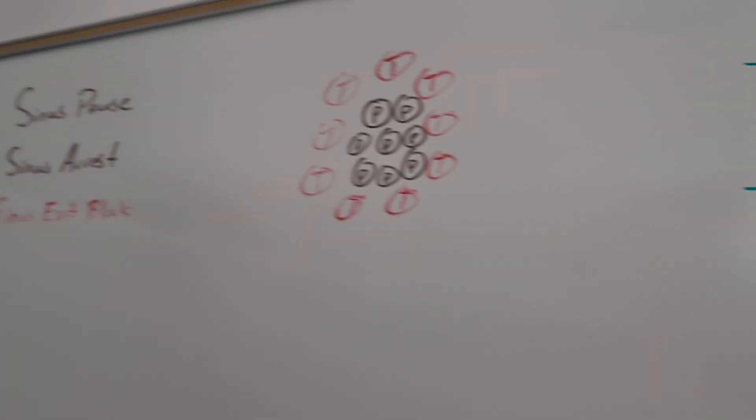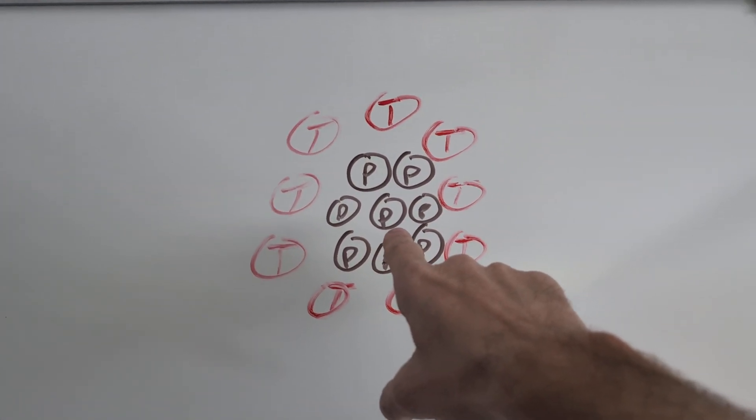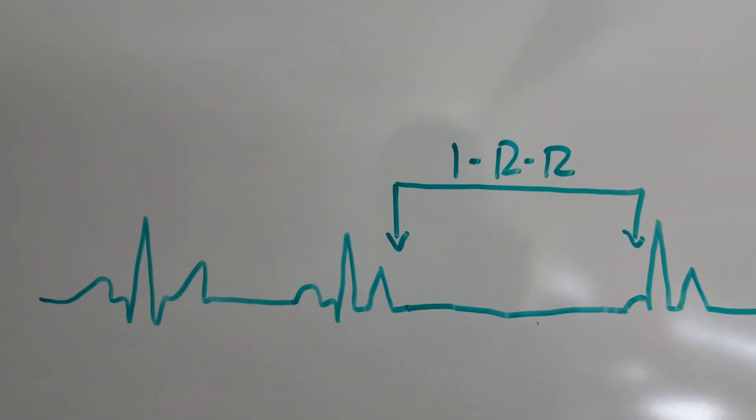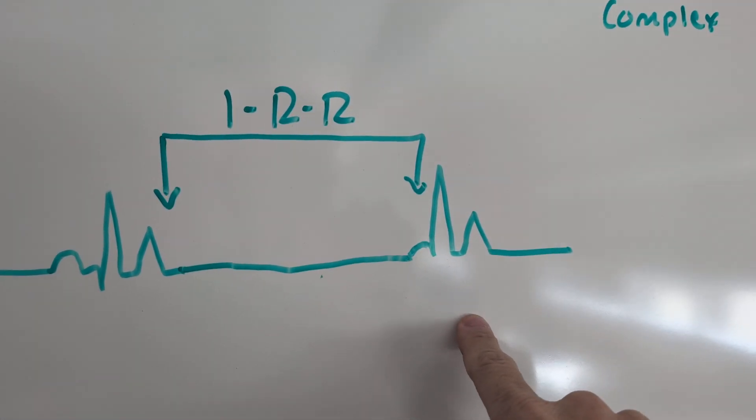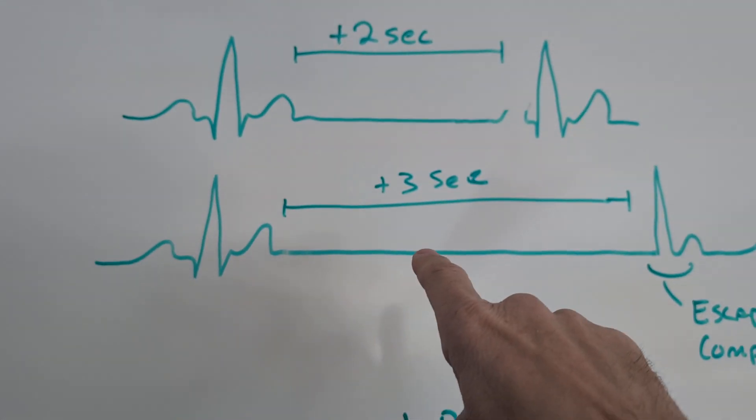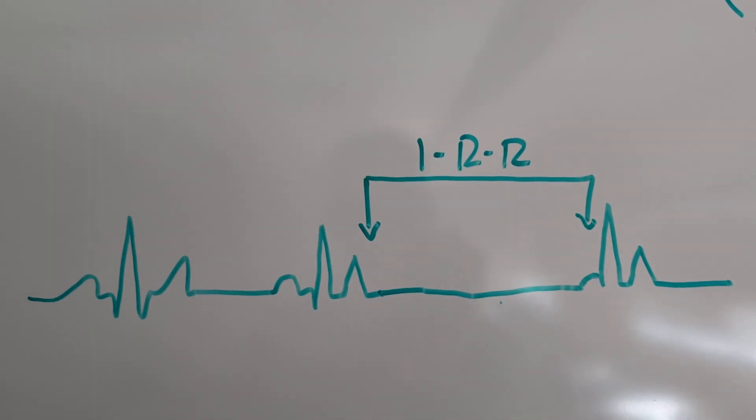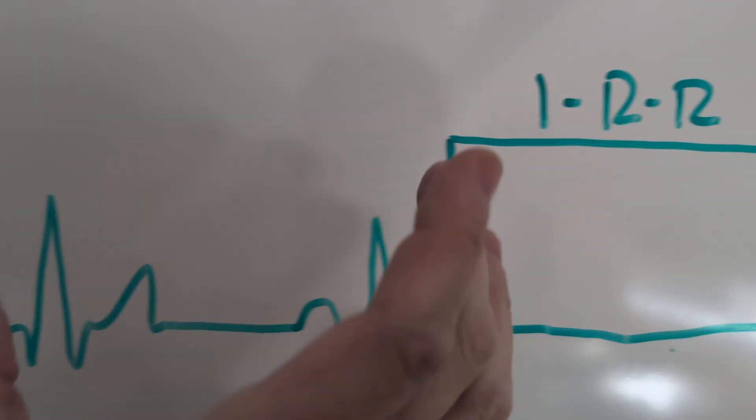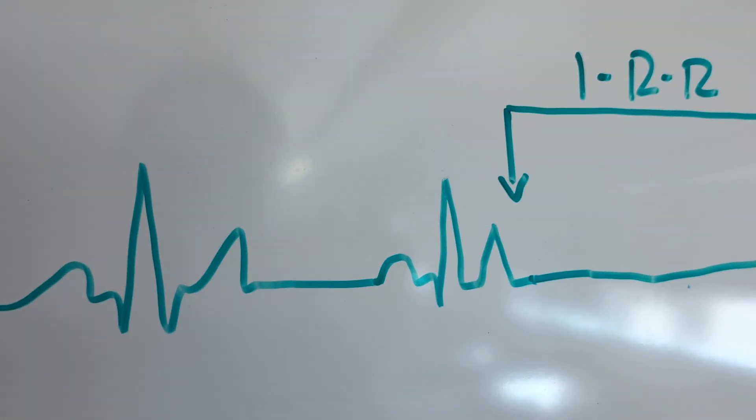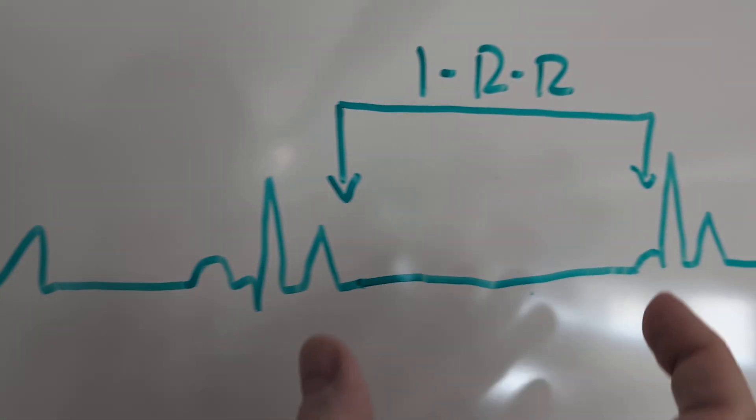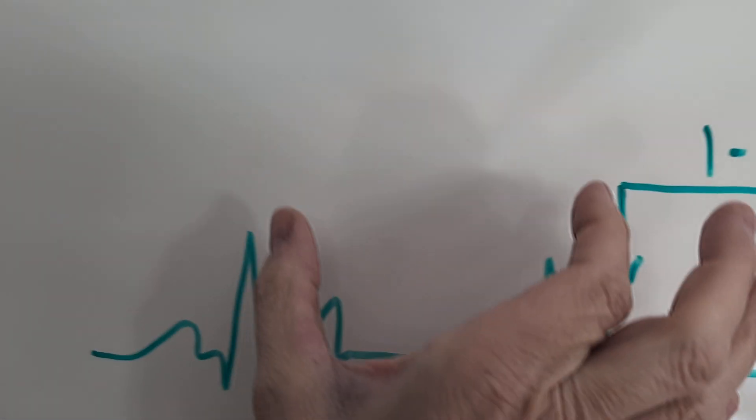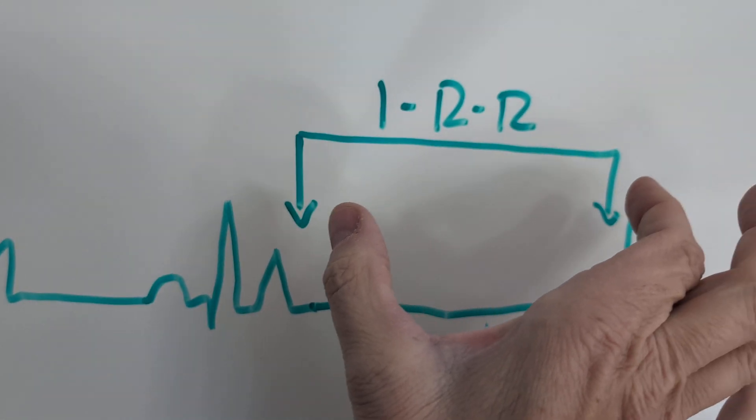Now, in the setting of the sinus exit block, the P cells are firing, but that is not being transmitted by the T cells. And so what happens is you're going to get a pause on the ECG like you would see in sinus pause or sinus arrest. But the pause will be some, if you look at the R to R interval of the normally conducted complexes, the length of that pause is going to be some integer value of the R to R interval.